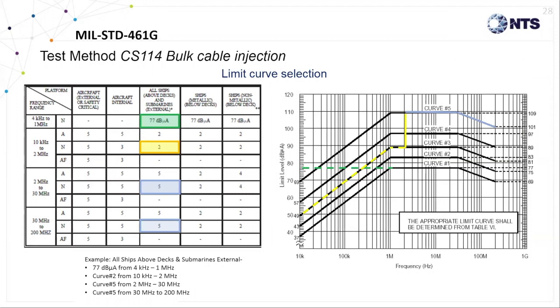The CS114 test levels are segregated into five curves which are applied to each platform type identified across the top of this table. The applicability of the curve level for a particular platform is further defined by four frequency bands as well as each procurement branch of the DoD shown along the left side of the chart. You'll notice that the curve levels for a given platform vary between branches and frequency bands.